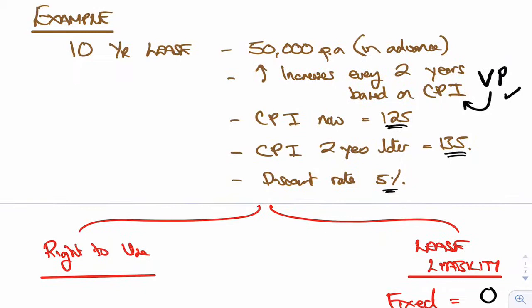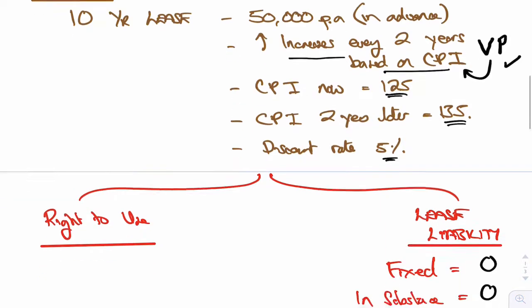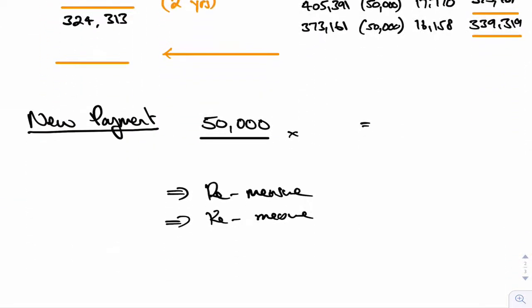But it's at the end of year two, because it increases every two years based on the CPI, every two years then we've got to have a look at this variable payment. So this variable payment, this new payment, that 50,000 was based on the CPI at 125. It is now 135.